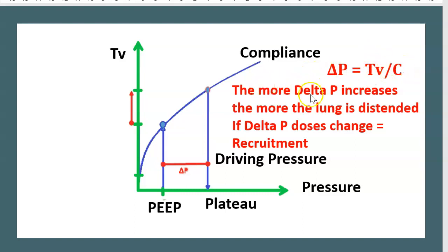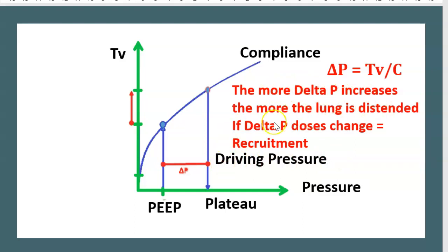What does this mean? The more delta P increases, the more the lung is distorted. If delta P doesn't change, that means there is recruitment — a lot of alveolar recruitment is occurring.